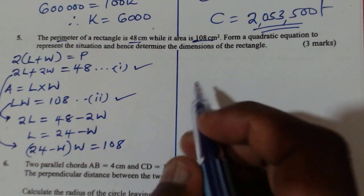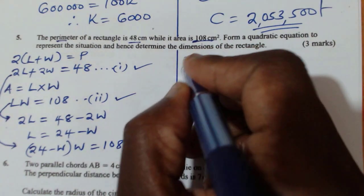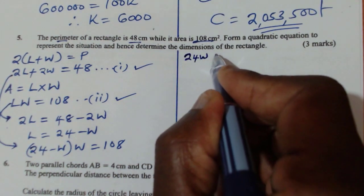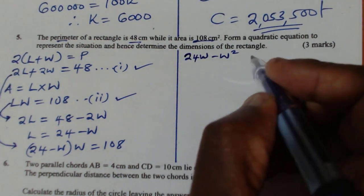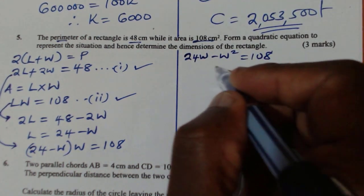So from there, we can open this. We get 24W minus W squared equals 108. So organize this one.